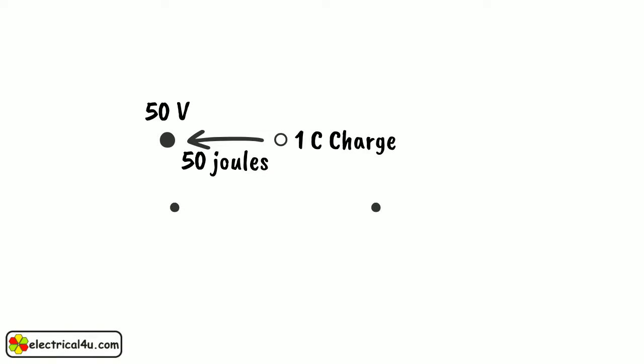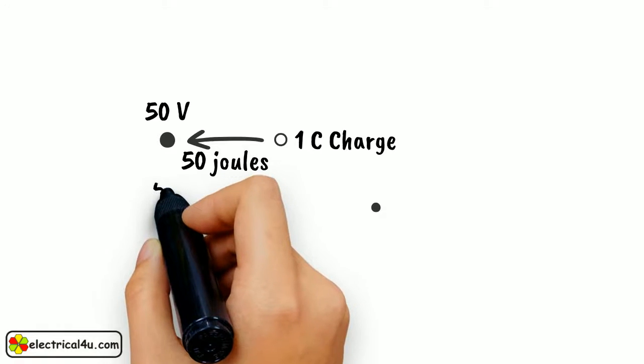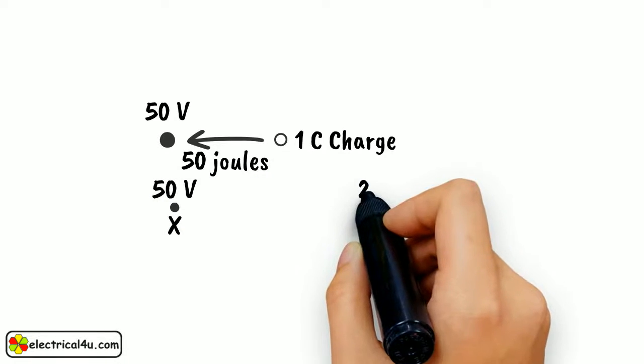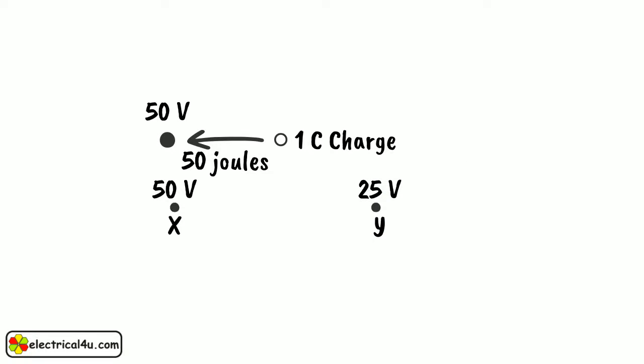The potential difference of two points indicates the difference of charge condition of these points. Suppose point X has a potential of 50 volts and point Y has a potential of 25 volts.